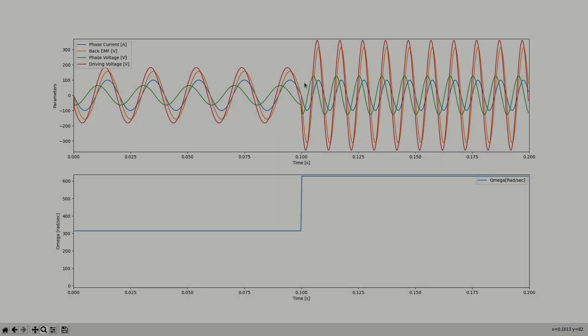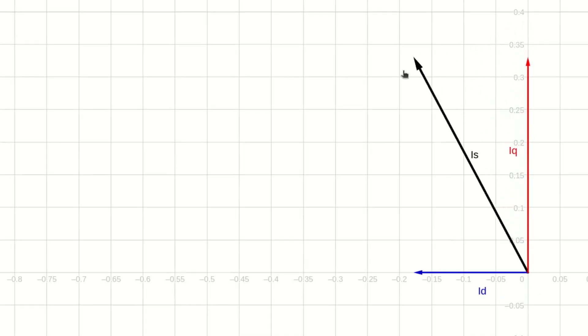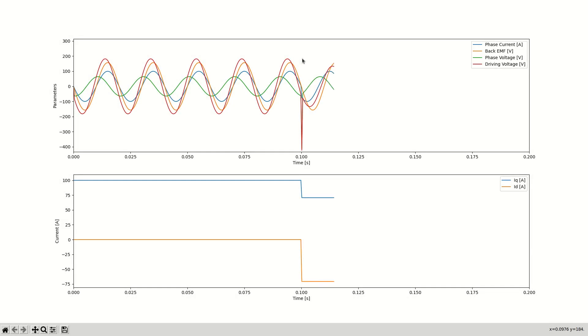Now let's try the field weakening technique. Let's see what happens to the driving voltage, at a constant speed, when we shift the stator current vector towards the negative D axis.